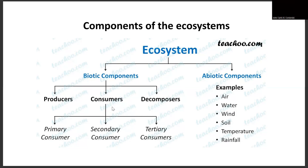Consumers are divided into categories such as primary consumers, known as herbivores; secondary consumers; and tertiary consumers, which are either carnivores or omnivores. For the abiotic components, we have examples such as air, water, wind, soil, temperature, and rainfall — all of these are the non-living things that we can see around us.